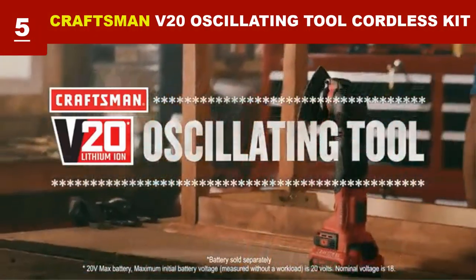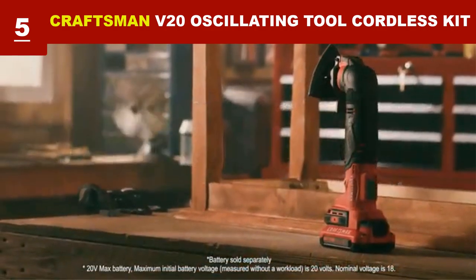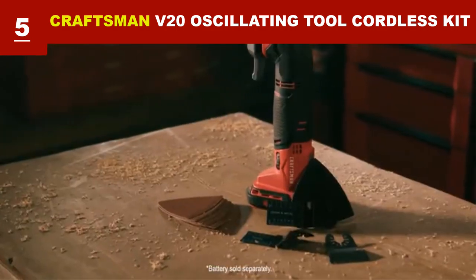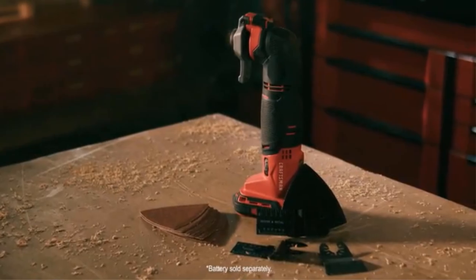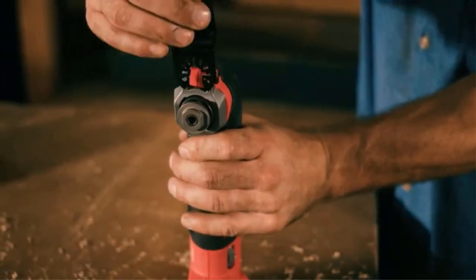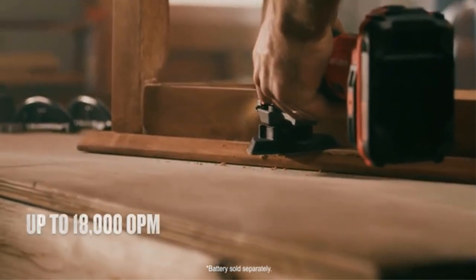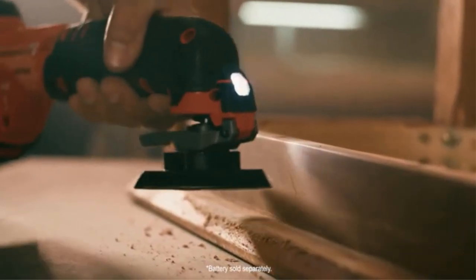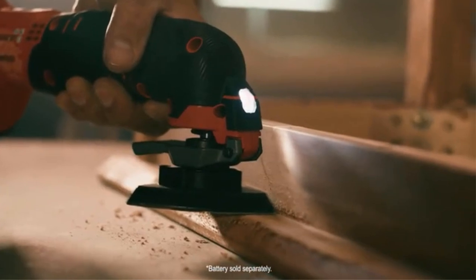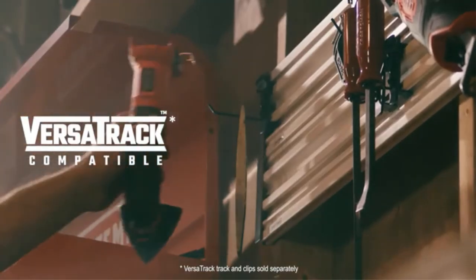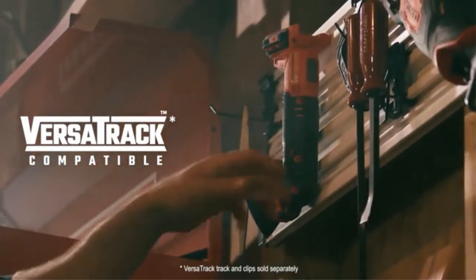Craftsman oscillating multi-tool has variable speed from 8,000 to 18,000 OPM that provides optimal control in various applications. 14-piece kit includes tool, battery, charger, storage bag, and multiple accessory attachments. Its LED work light provides improved visibility.